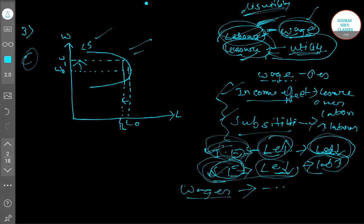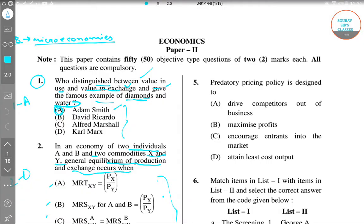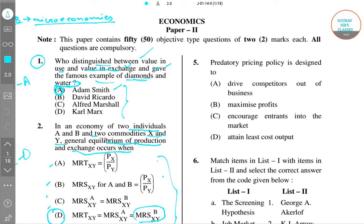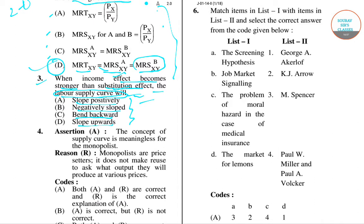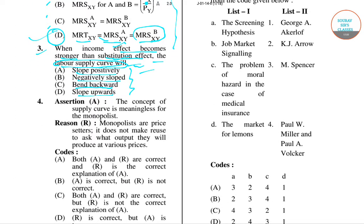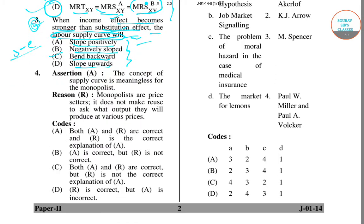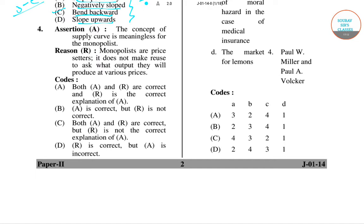So far we have solved three questions. Now we'll solve other questions. Question number four states: the concept of supply curve is meaningless for a monopolist. The reason given is that monopolists are price setters and it does not make sense to ask what output they will produce at various prices.